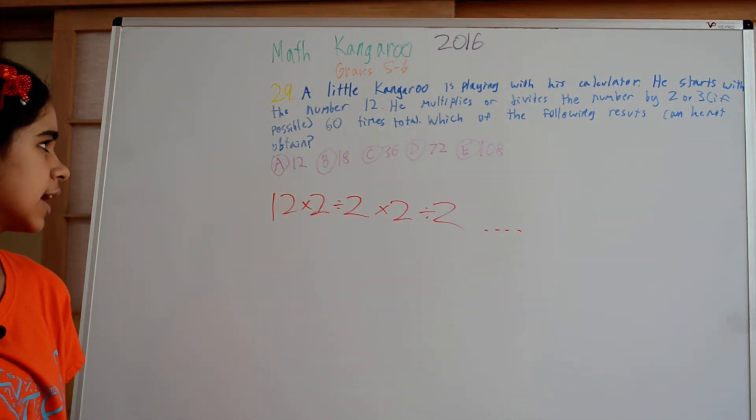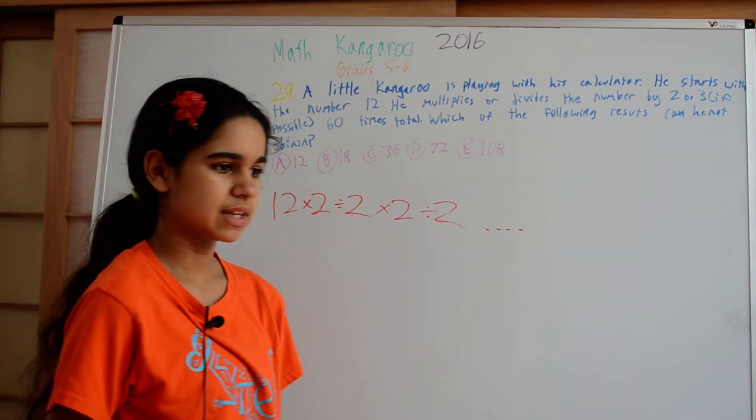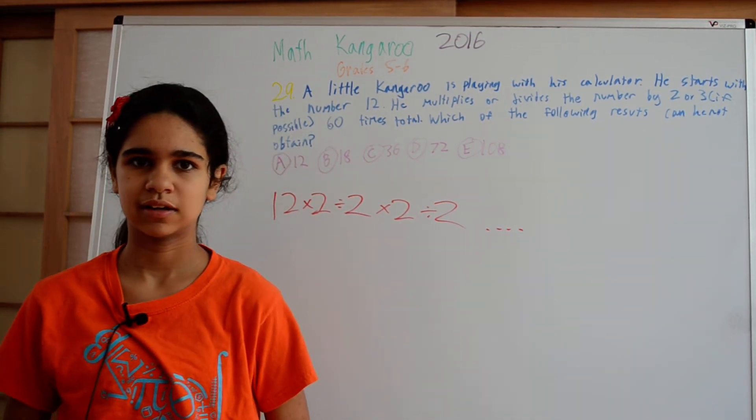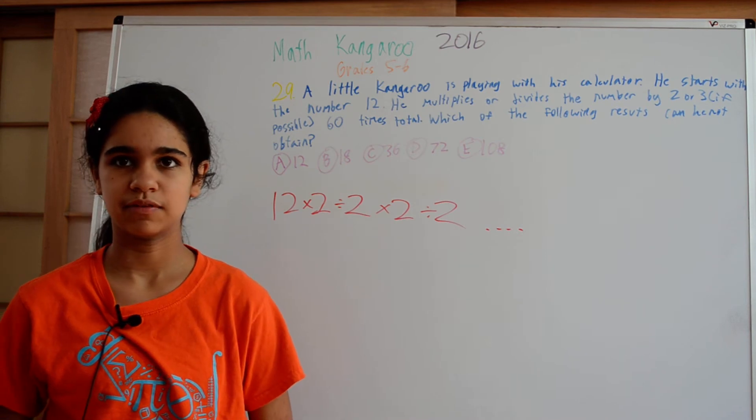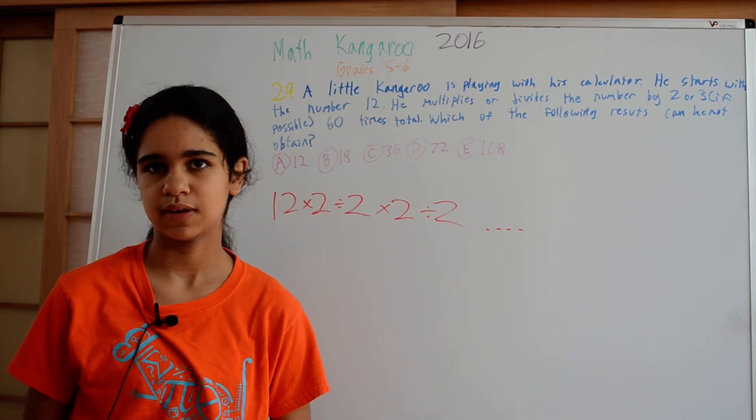So really we don't have to check if we can get to all these numbers by doing 60 things to it. We can just check if we can get to those numbers by doing any even number of things. Then we can fill up the rest of the things with just times 2 divided by 2.